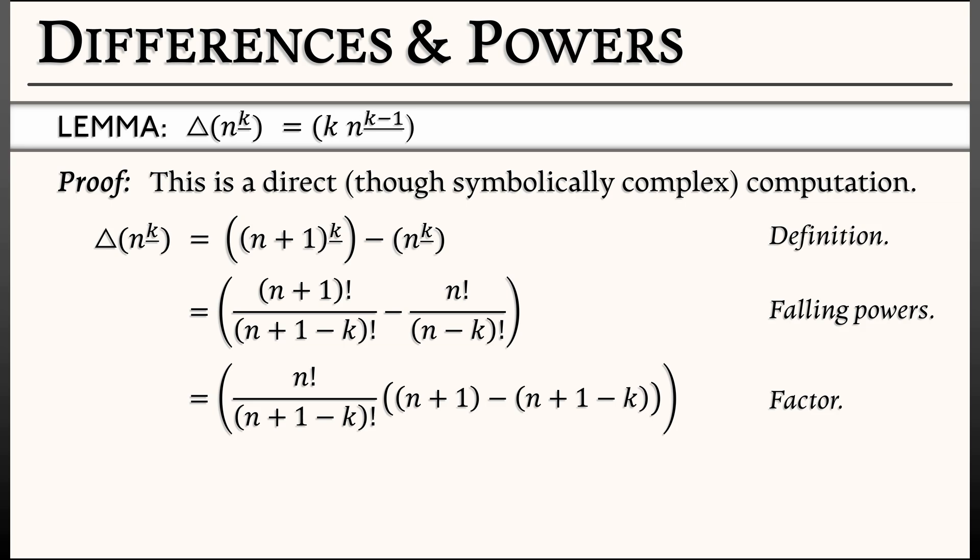So what I have in the end after I factored that out is n factorial divided by n plus 1 minus k factorial times quantity n plus 1 minus quantity n plus 1 minus k. A little bit of simplification gives me k times n factorial all divided by n minus quantity k minus 1 factorial. That gives me k times n to the falling k minus 1 by definition of falling powers. And that's it. That's the result we were looking for.